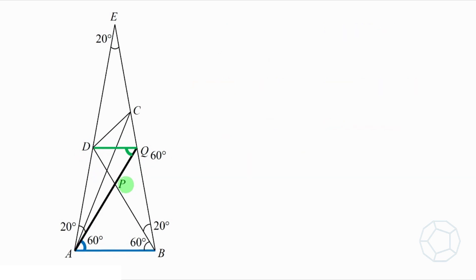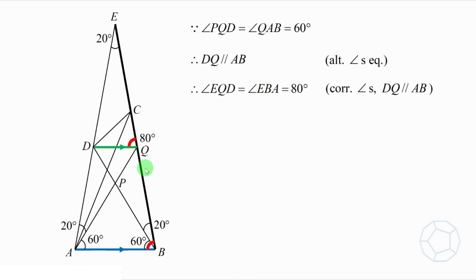Now, we consider the green side DQ and the blue side AB. Because angle PQD and angle QAB are both 60 degrees, therefore, DQ and AB are parallel, and the reason is alternate angles equal. So, the two red angles, angle EQD and angle EBA, both are 80 degrees, because of corresponding angles on parallel lines.